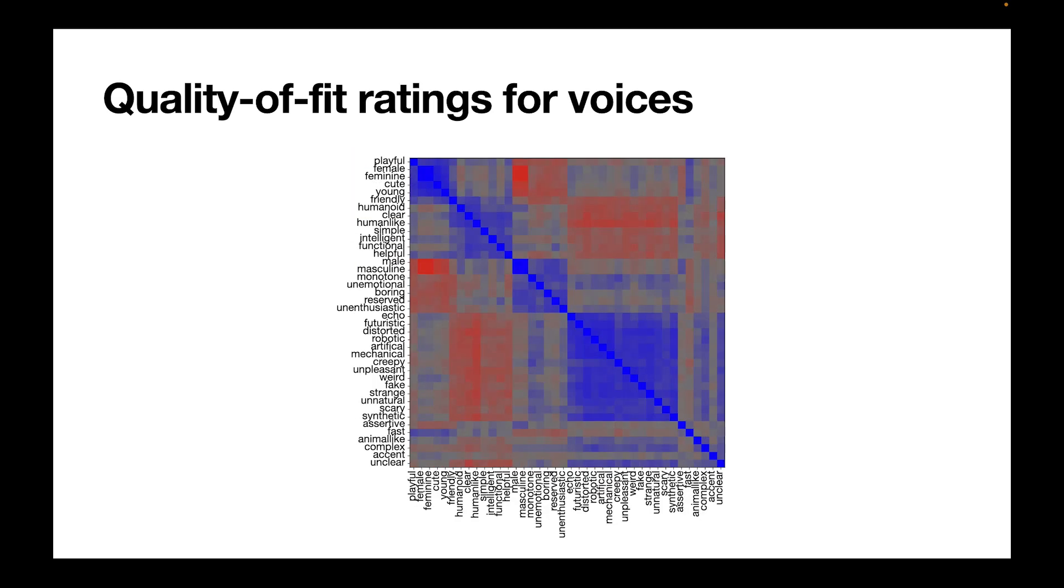For the voice, we see that the correlational structure contains more clusters. So the first big cluster contains dimensions such as creepy, unpleasant, mechanical, and robotic.